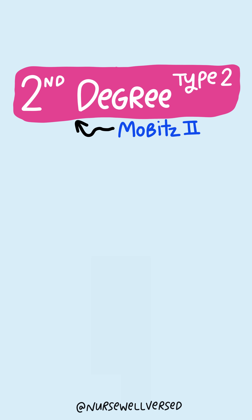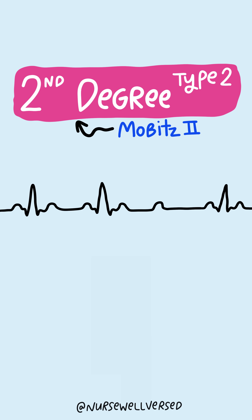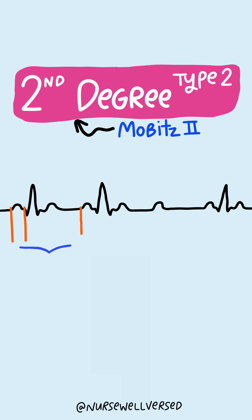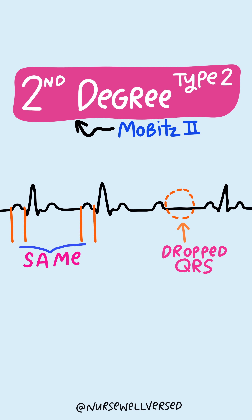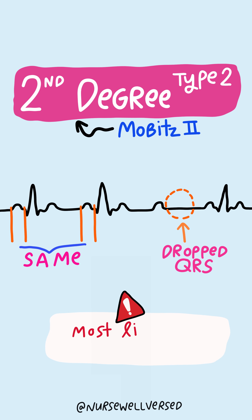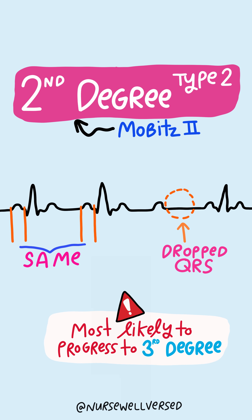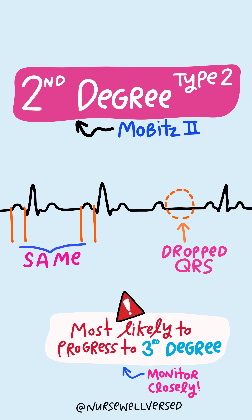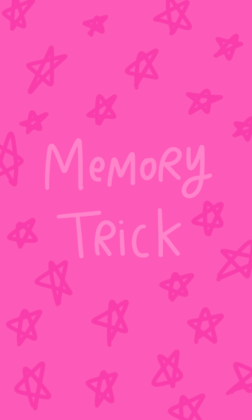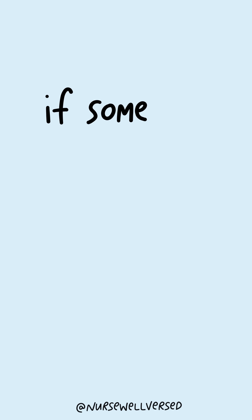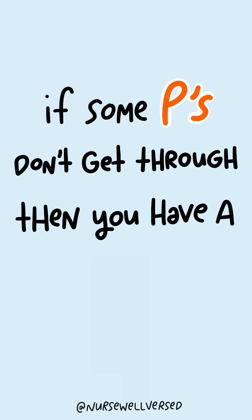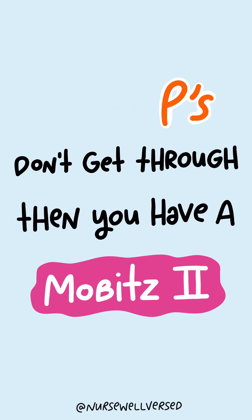Second degree type 2, or Mobitz 2, occurs when the PR intervals stay consistent and then a QRS complex is randomly blocked. Important to note that out of all the heart blocks, this is most likely to progress into a third degree, so it should be assessed and monitored closely. A simple rhyme for this is: if some P's don't get through, then you have a Mobitz 2.